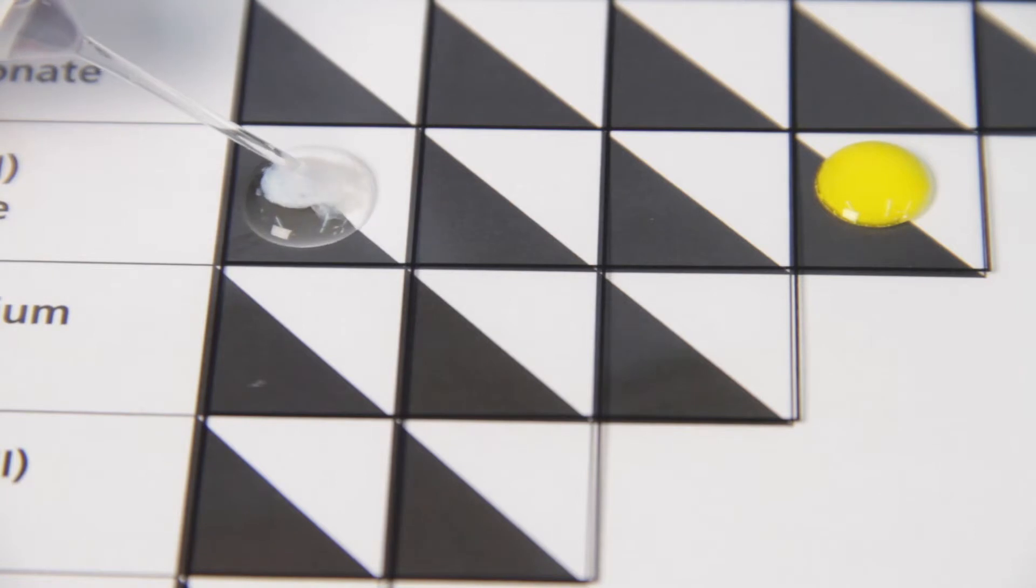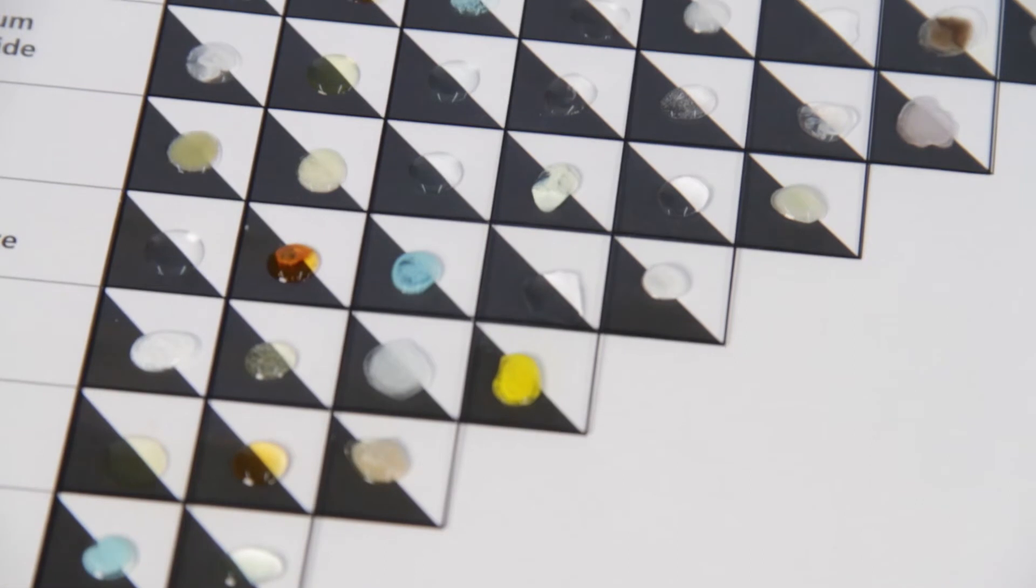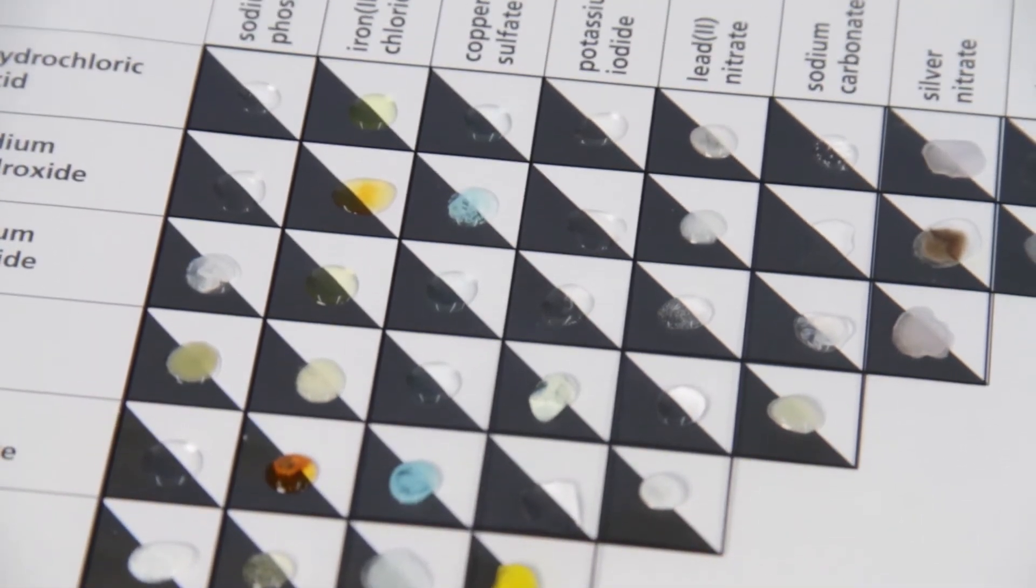Students work their way through the 45 individual reactions and record their observations, including formation of a precipitate, formation of a gas, and changes in color.